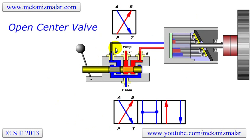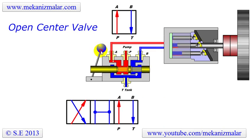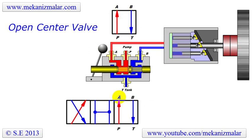The corresponding flow diagram representing the extreme left position is shown by a square diagram at the top. When the control arm is pulled to the extreme right, the pressurized oil is diverted to port A of the valve, and the low pressure oil coming from the motor is diverted to port B of the valve.